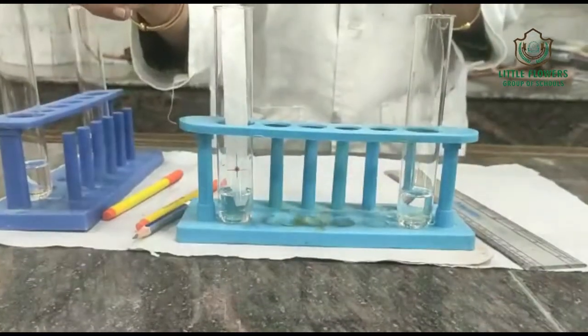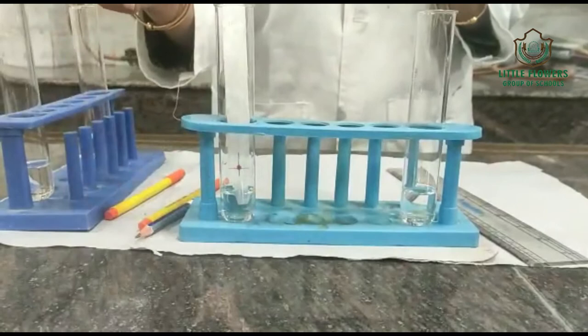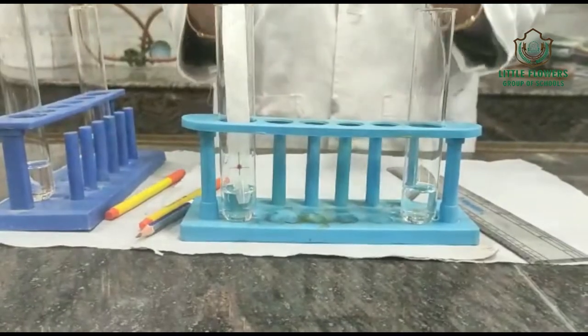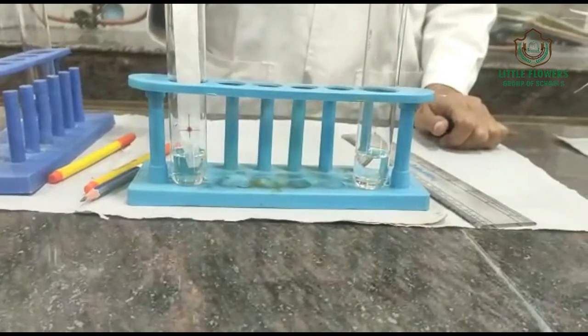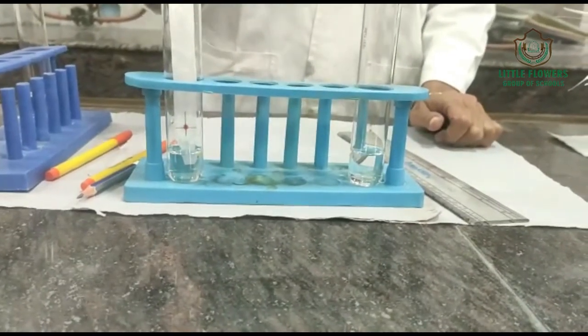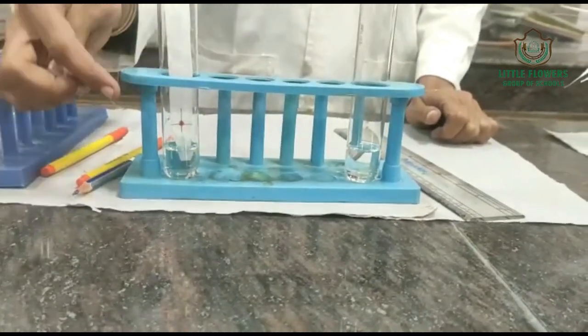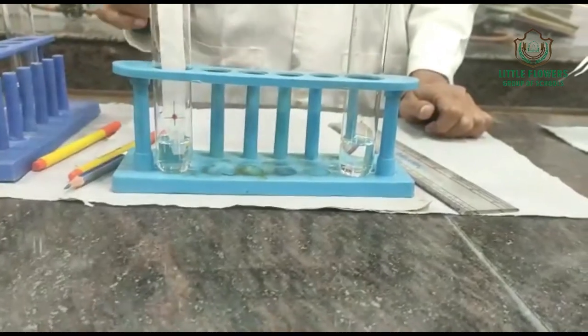Solvent is traveling. Dye is traveling. Chromatography paper is stable. Here we can see chromatography paper is a stationary phase and solvent is a moving phase.